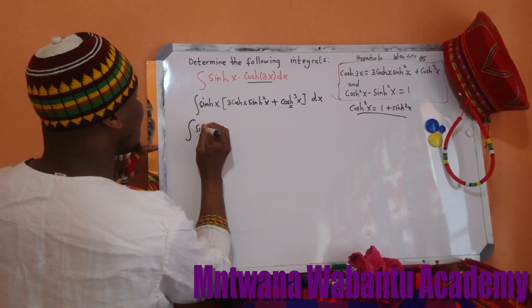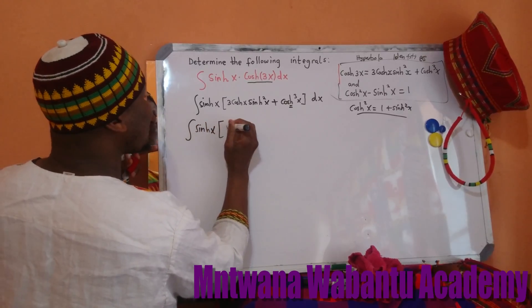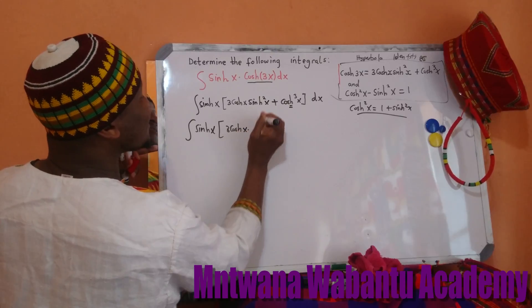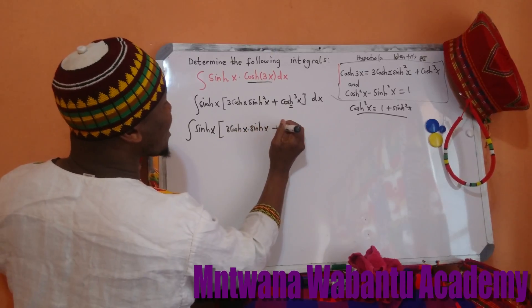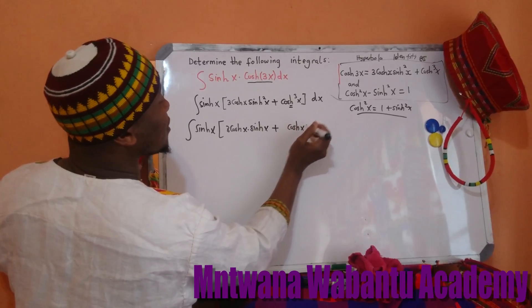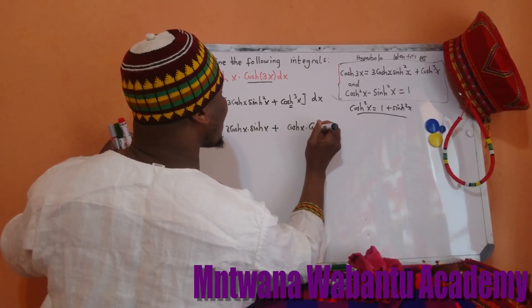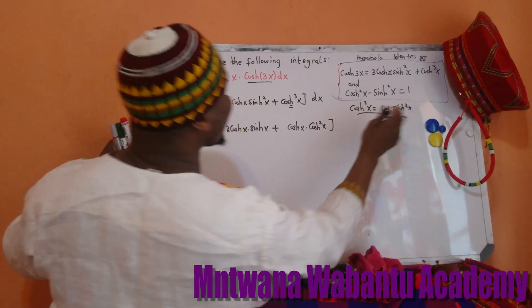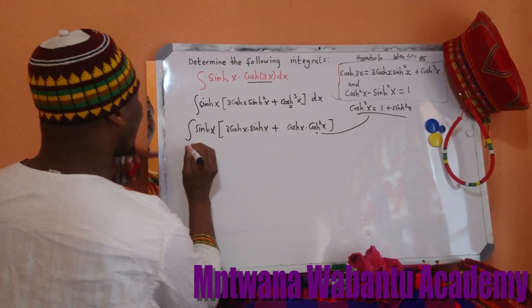We'll have an integral: cosh(x) multiplied by 3cosh(x), and this will be plus cosh(x) times cosh²x. Why do this? Because I know the value of cosh²x is equal to 1 plus sinh²x, so I'm going to plug it in here.